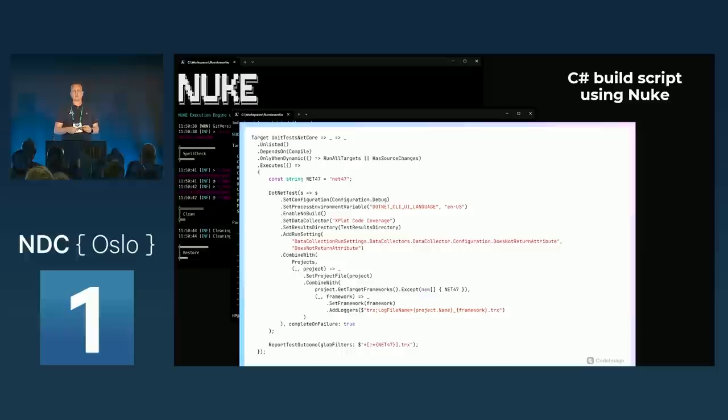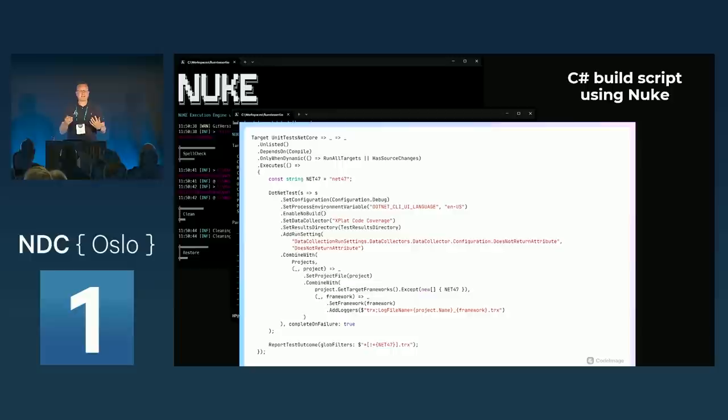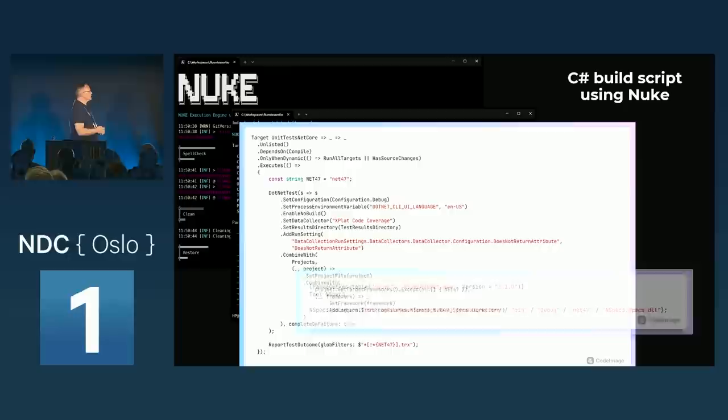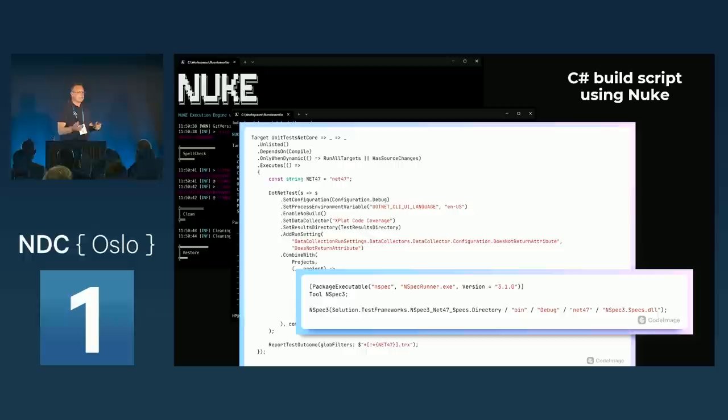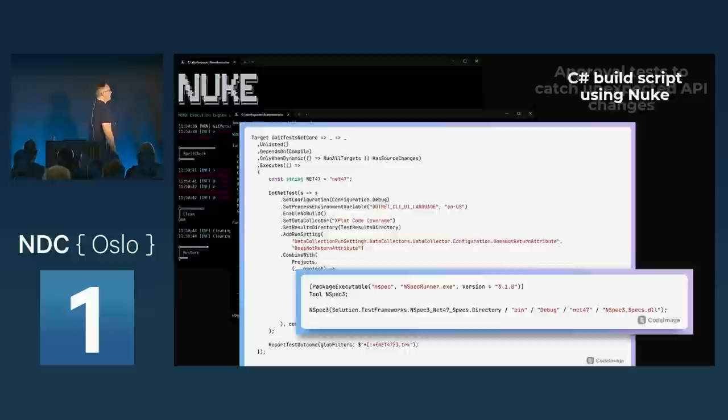Something similar also exists for cloud deployment called Pulumi — not used on Fluent Assertions but a similar idea. It keeps you out of the YAML hell and JSON hell of Terraform — you code in C#, you can debug it, put breakpoints in, refactor things, rename things, and even read it. It's very extensible. I use it everywhere. There's a risk it becomes my new golden hammer but we all have something like that.